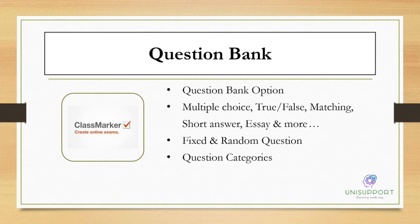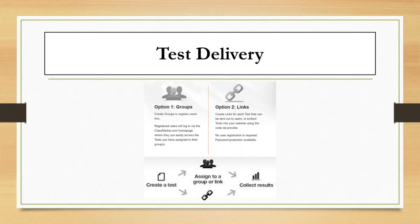For example, if you want to set up hard expert-level questions, average questions for typical students, and easy questions to enable students to score good marks, you can assign questions to those difficulty categories. Later when setting up your quiz, you can configure an automatic procedure to pick, say, five questions from the hard category, ten from the average category, and five from the easy category — a quite easy way to set up a well-balanced question paper.